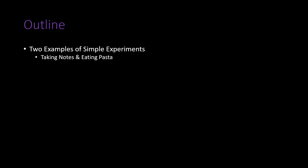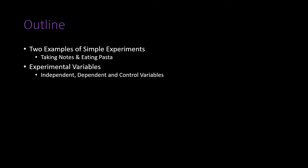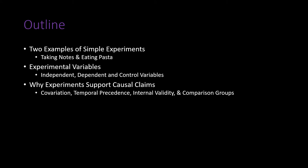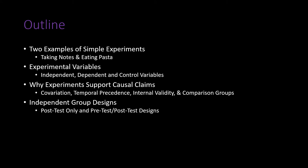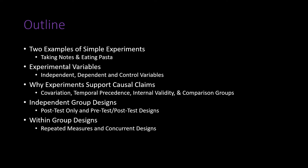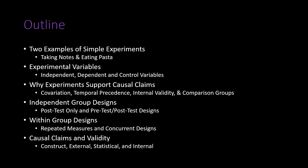Here's an outline of what this lecture will consist of. We'll first talk about two examples of simple experiments, then talk about experimental variables — mainly a section of terms. We'll then discuss why experiments are able to support causal claims, then go into the two types of experimental designs: independent groups and within groups designs. Finally, we'll examine causal claims and validity in relation to experiments.